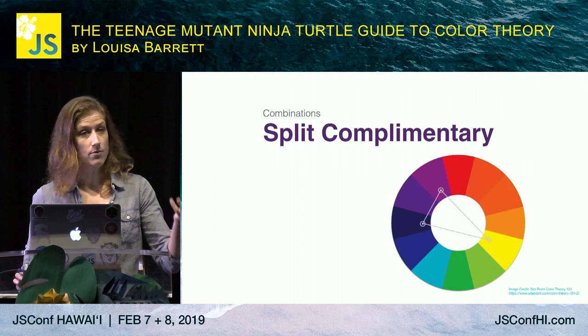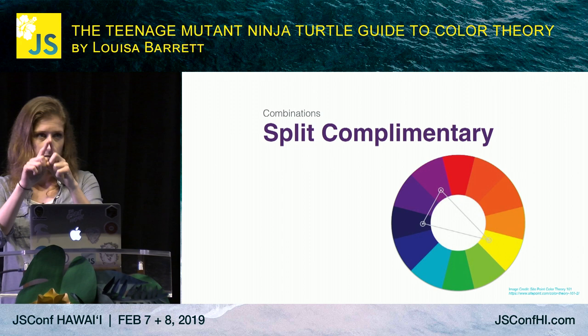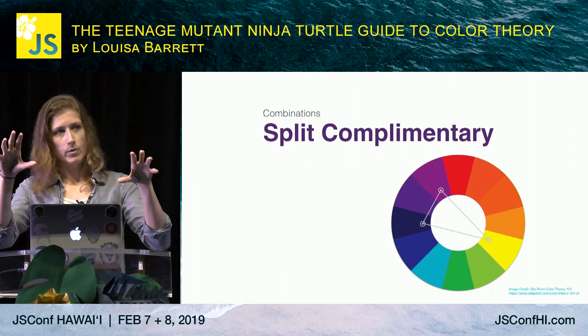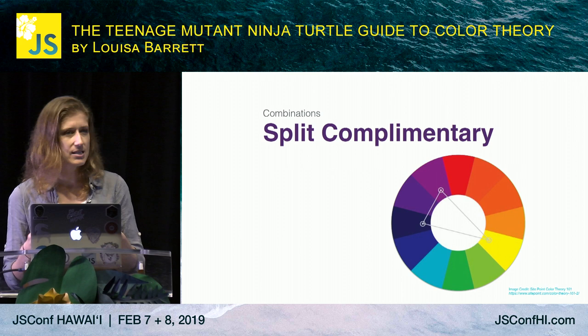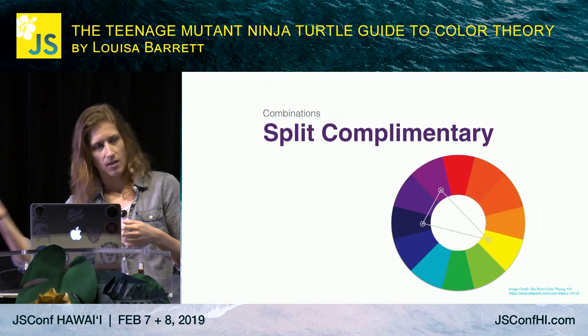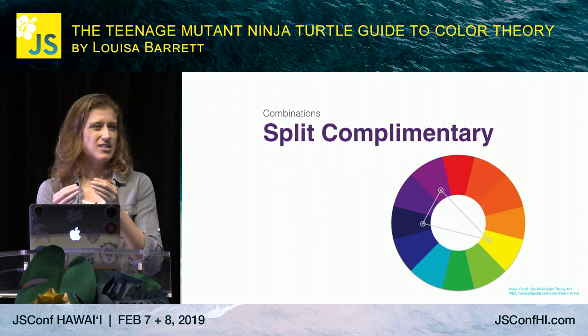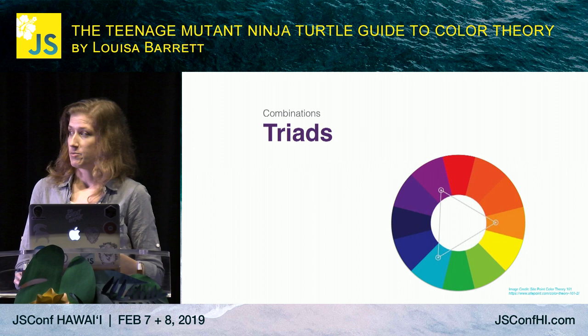To get around that, we have the concept of a split complementary color. You take a complementary color combination and then move one of them up or down a tick on the color wheel to soften that combination just a little bit — a little less high contrast, a little softer. You'll see a lot of sports teams leveraging split complementary color combinations because they're bright and punchy, but they don't fight too much when you actually look at them.